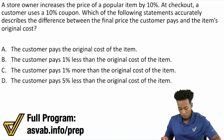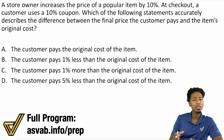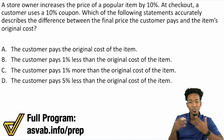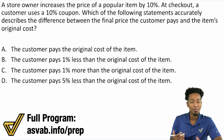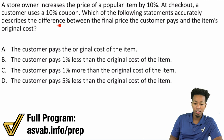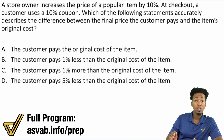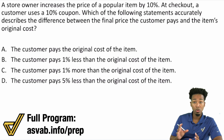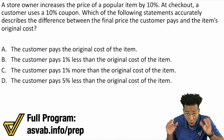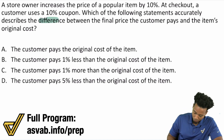What we're going to do first is read the question, and then I'm going to read the entire problem so we can understand what's going on, the story behind it, and strategize and make a plan. The question asks: which of the following statements accurately describes the difference between the final price the customer pays and the item's original cost? What we're finding is the difference between the final price and the item's original cost.